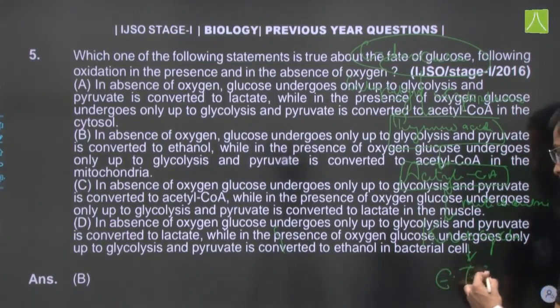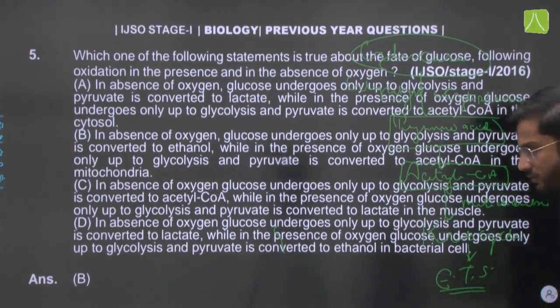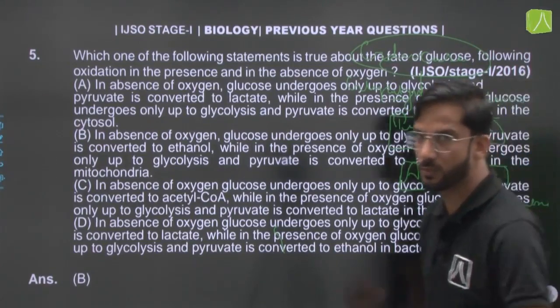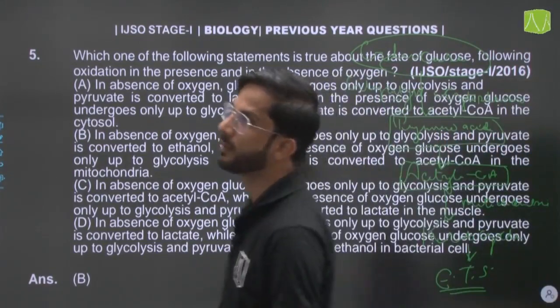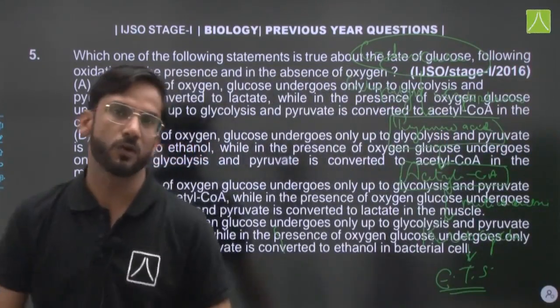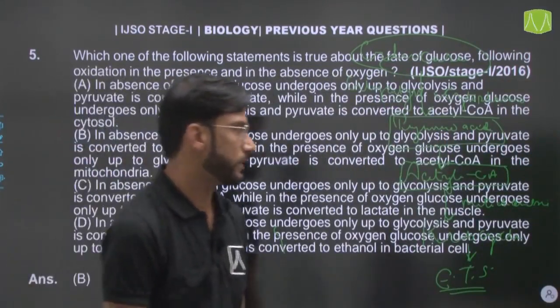Last is the ETS cycle — the electron transport chain — where transportation of electron molecules happens, occurring in the inner membrane of the mitochondria.